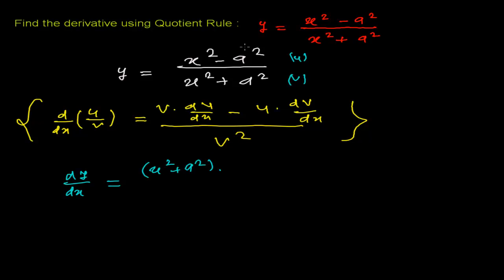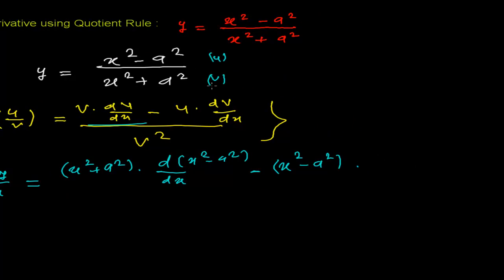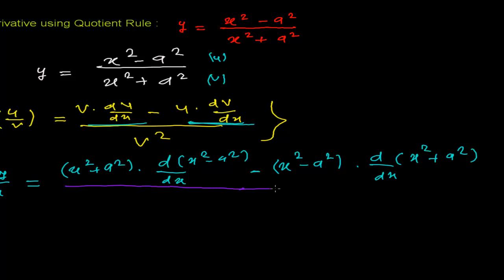So applying the quotient rule: we take the second function, x squared plus a squared, times the derivative of the first function — d(x squared minus a squared)/dx — minus the first function, x squared minus a squared, times the derivative of the second function — d(x squared plus a squared)/dx — all divided by v squared, which is (x squared plus a squared) squared.